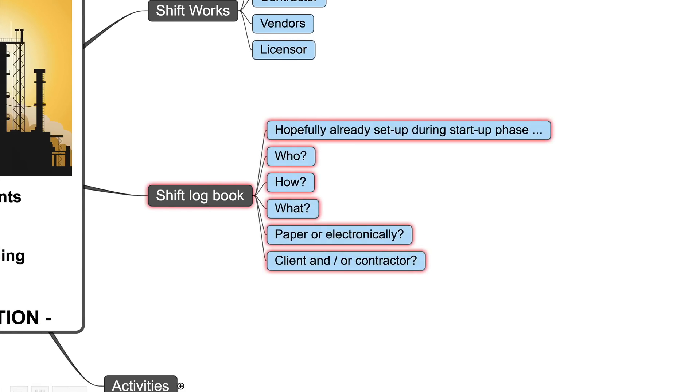We should already set up during the startup phase our shift log book. We have to know who will write in the shift log and how they have to write this, what will we write in the shift log, which things we have to document. Will we do this on paper or in an electronical form? Will we have a shift book just for the client or one for the contractor or a combined one? This should have been decided already before startup.